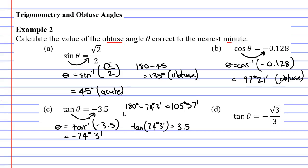105 degrees, 57 minutes is the supplementary angle to 74 degrees, 3 minutes. Okay, so what if we did tan of 105 degrees, 57 minutes? What would we get if we did this?